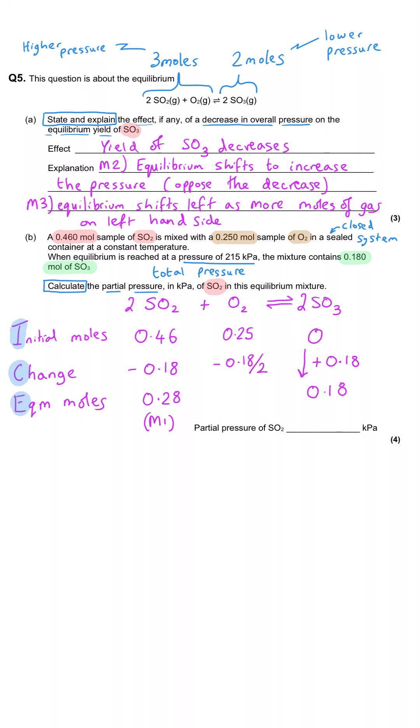So in other words, it will decrease by 0.09. And so we will end up with 0.16 moles of oxygen at equilibrium. And so that will be our second mark.